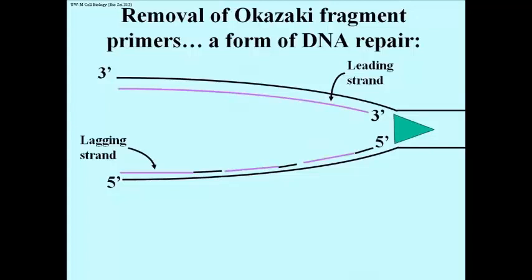Let's focus on one replication fork in E. coli. After synthesis of a primer at the origin of replication, which isn't shown here, the leading strand in this slide is being synthesized continuously as helicase progressively unwinds DNA at the fork, by adding new nucleotides to its 3' end.